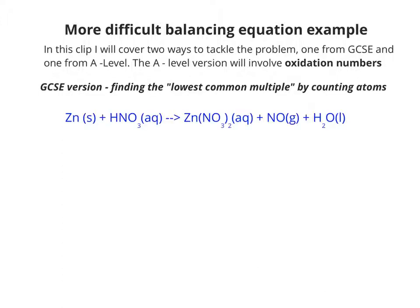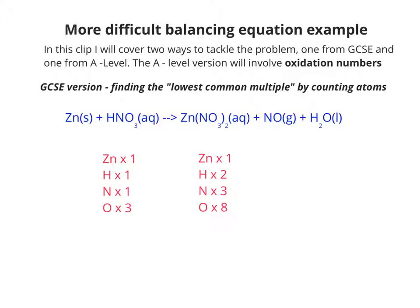So this is the unbalanced version. What we need to do is count up the atoms on each side. So on the left-hand side and right-hand side, you've got one zinc, so zinc's balanced already. Hydrogen isn't, neither is nitrogen, and neither is oxygen.